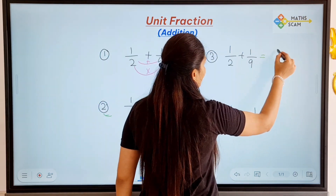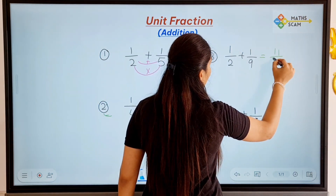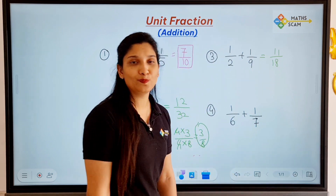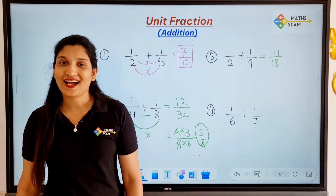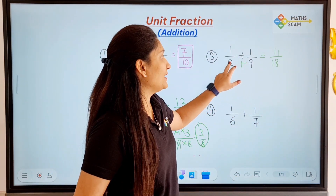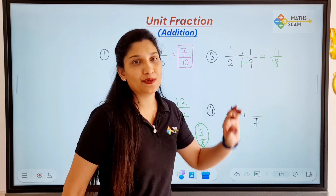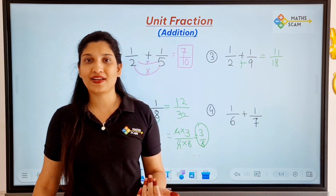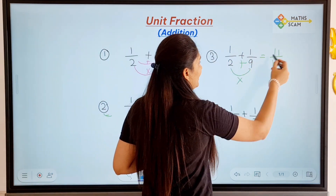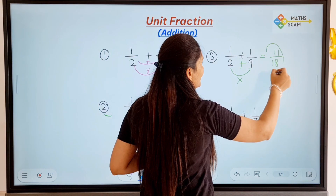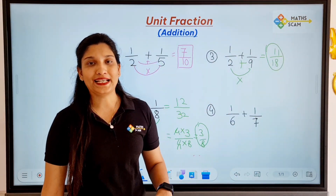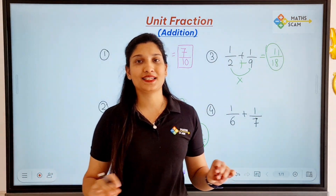Next question — 11 by 18. I wrote it directly. What I did is first addition: 9 plus 2 is 11. Then multiplication: 9 twos are 18. So the answer is 11 by 18. It's simple.